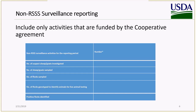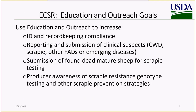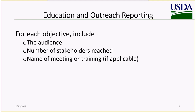Moving on to education and outreach goals for the equine, cervid, and small ruminant commodity. We'd like you to use education and outreach to increase ID and record keeping compliance; reporting and submission of clinical suspects including CWD, scrapie, other foreign animal diseases or emerging diseases; submission of found dead mature sheep for scrapie testing; and producer awareness of scrapie resistant genotype testing and other scrapie prevention strategies. For reporting this objective, include the audience spoken to, the number of stakeholders reached, and the name of the meeting or training if applicable.